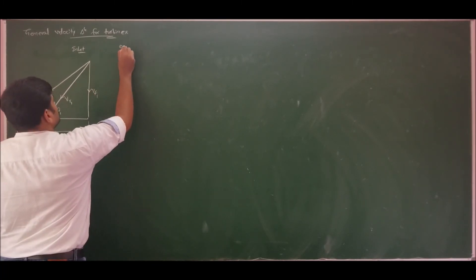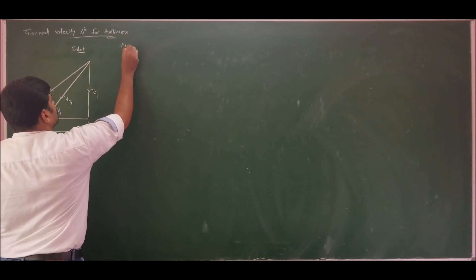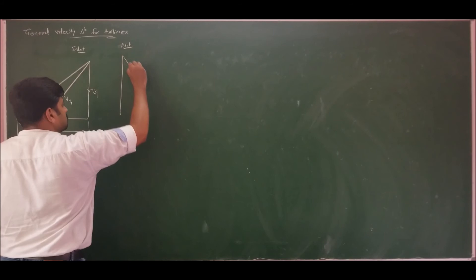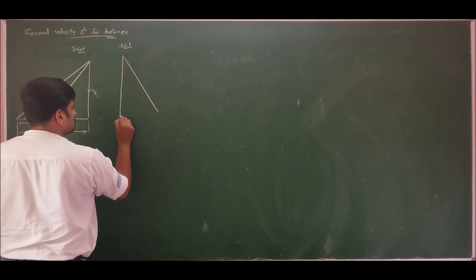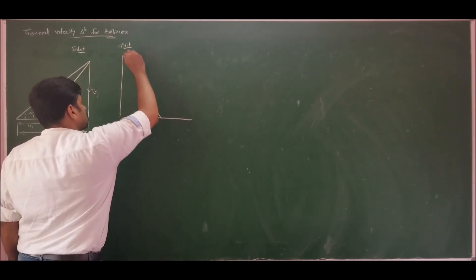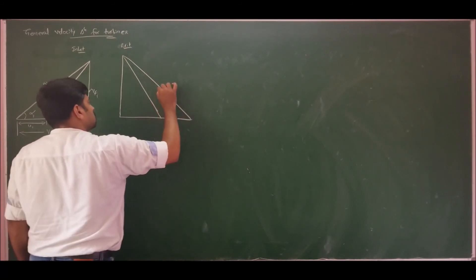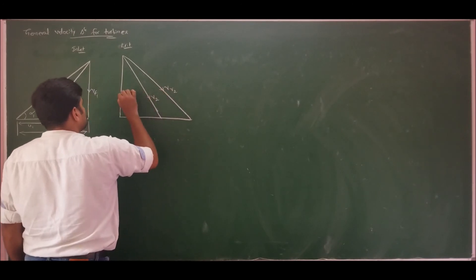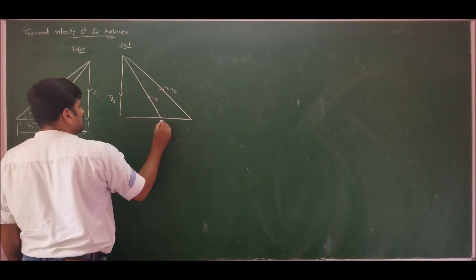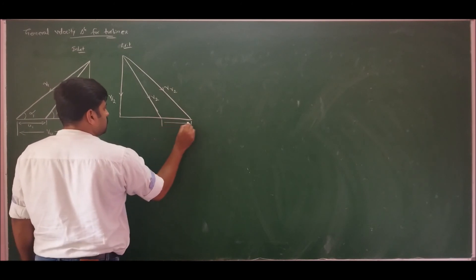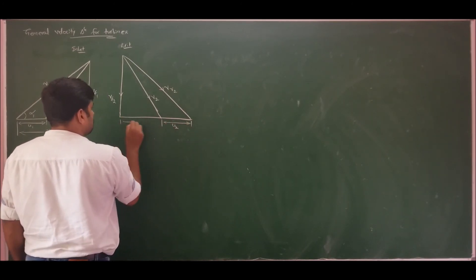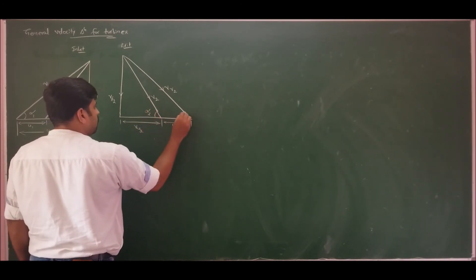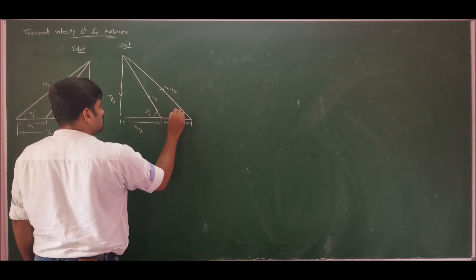At exit of the blade, we have Vr2, Vf2 (flow velocity), V2 (absolute velocity), with angles alpha2 and beta2. The blade velocity U is the reference. This is the general velocity triangle for power-developing turbines.